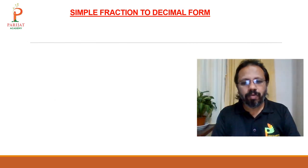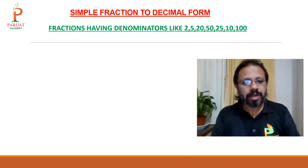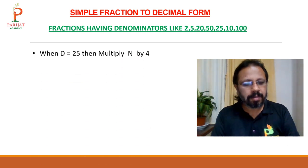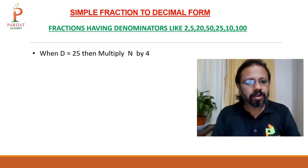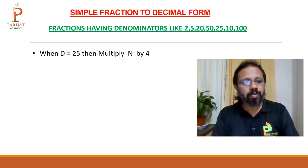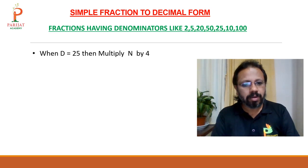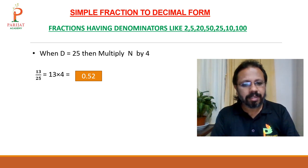Here we will go with one other type of simple fraction. When the denominator is 25, multiply the numerator by 4 to get the required decimal form. For example, 13 upon 25: multiply 13 by 4 to get 52. Since 25 is 2 digits, leave the last 2 digits and give the decimal — answer is 0.52.